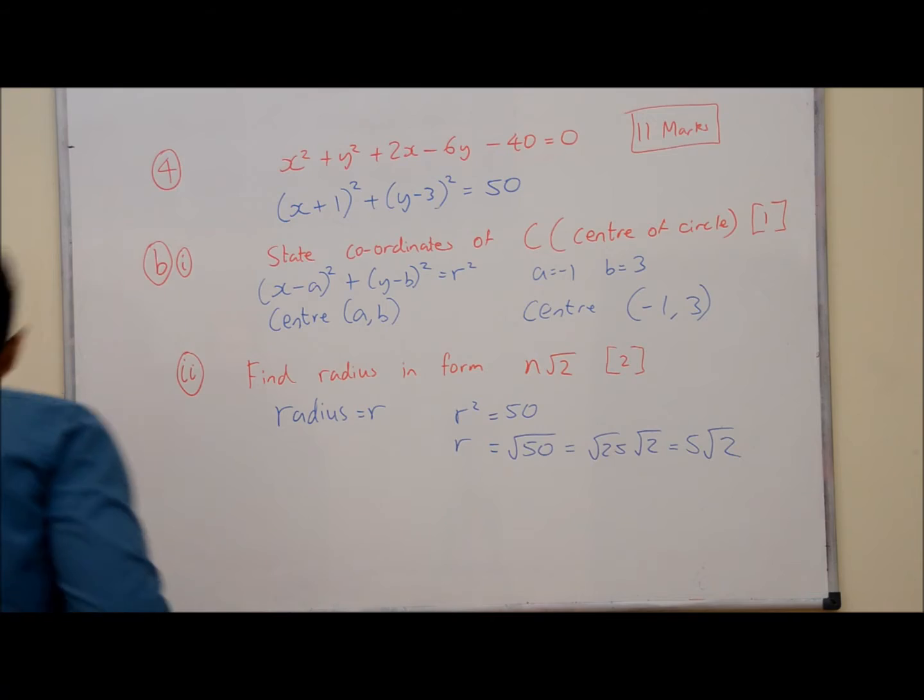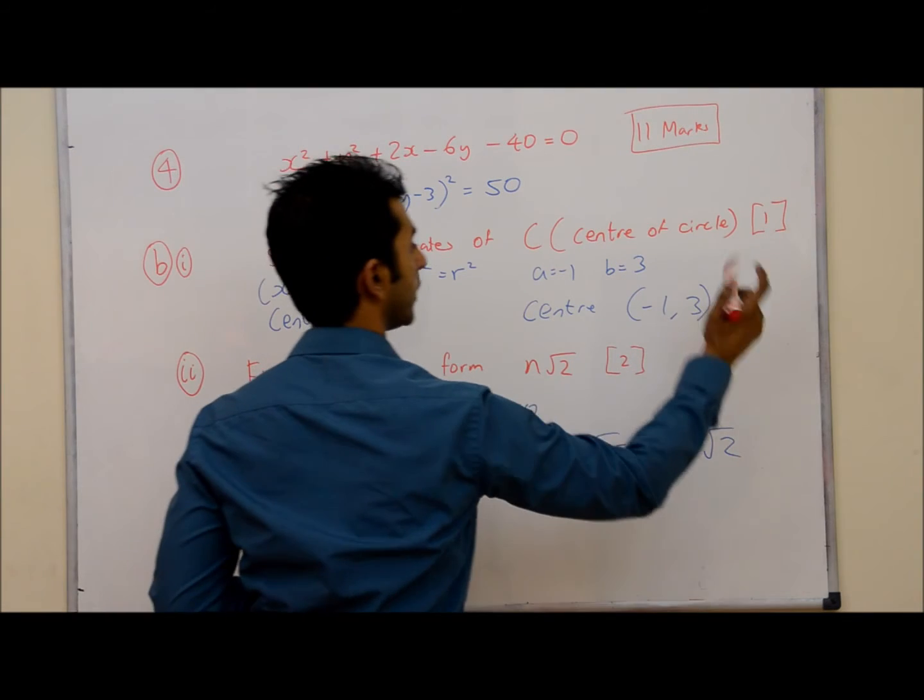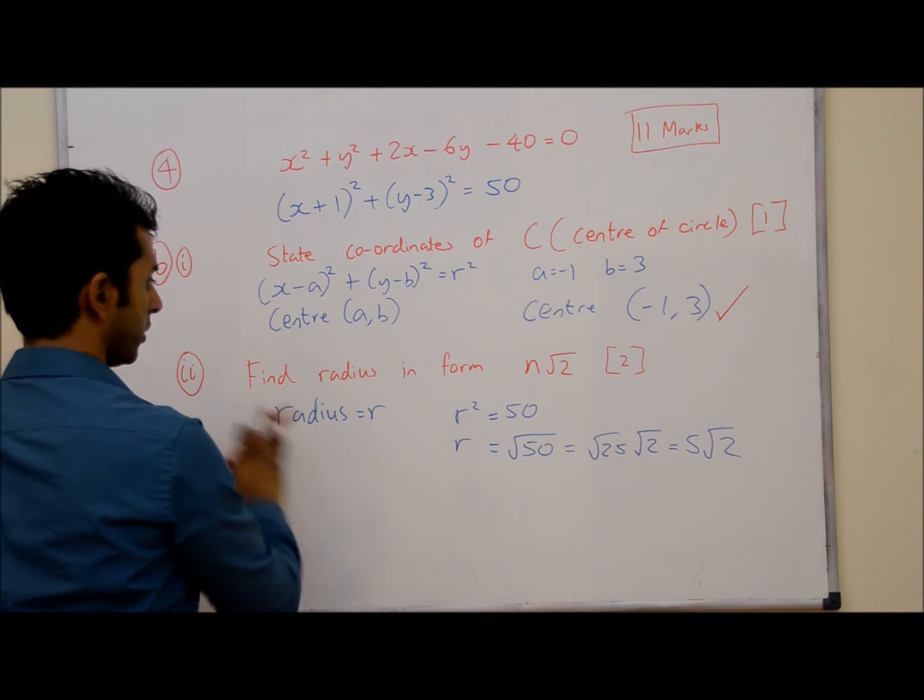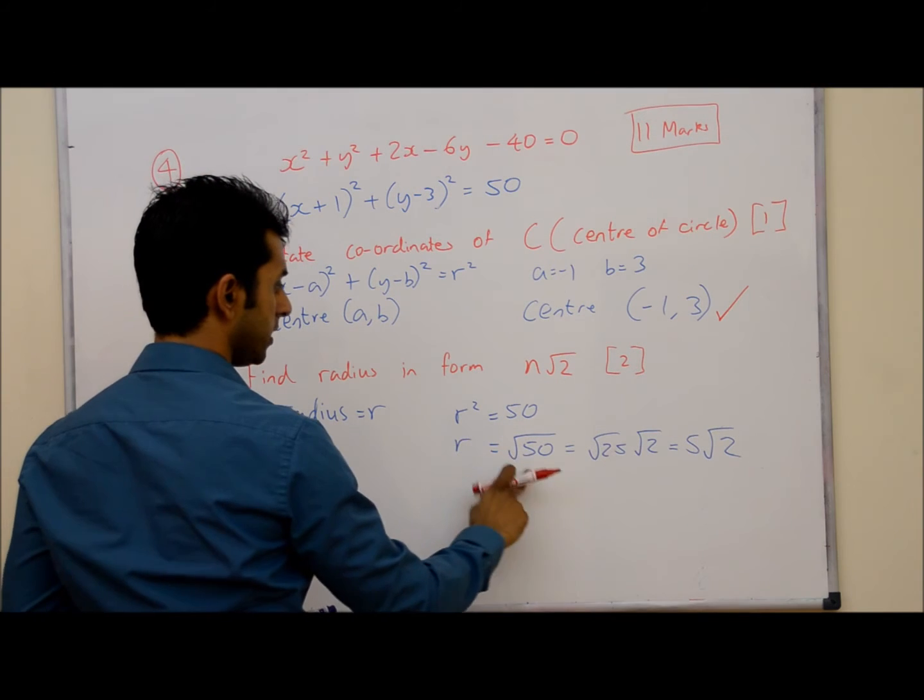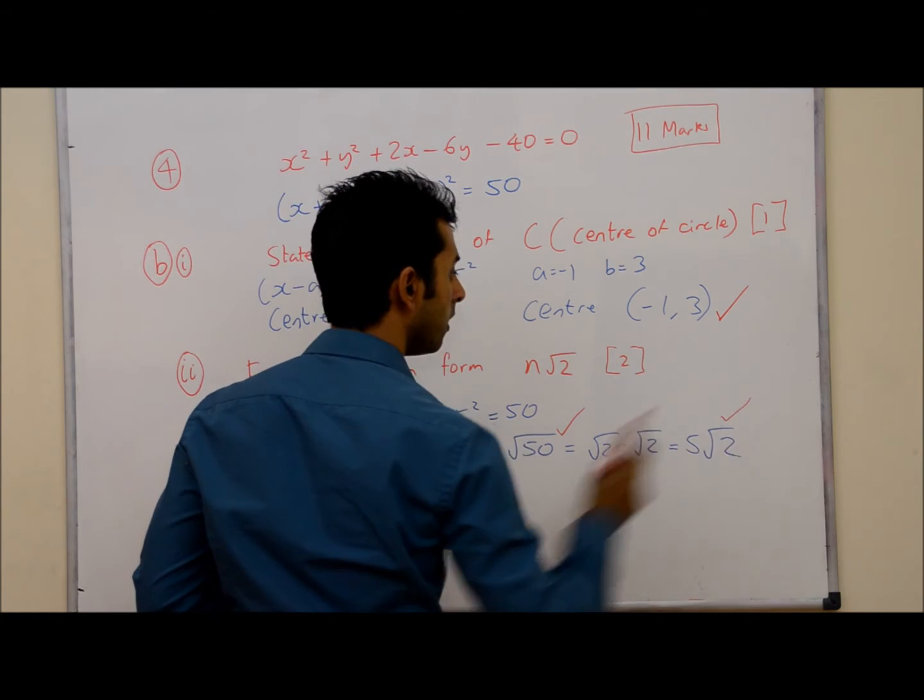So let's go through the mark allocation for the whole question. Well, this one's quite straightforward. It was a one-mark question. If you got that answer, you would get one mark. For part 2, you need to work out that r is equal to the square root of 50 for one mark, and then simplify that to get the second mark.